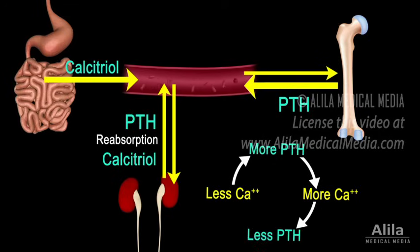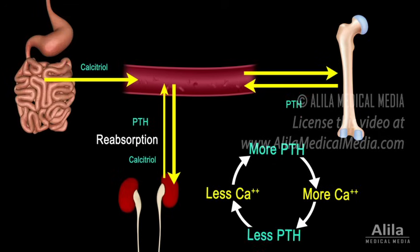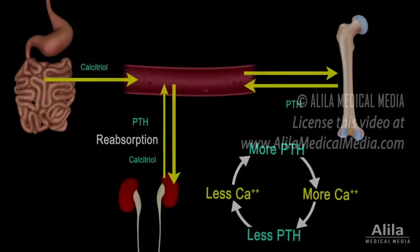The reverse happens when calcium level is high. This feedback loop keeps serum calcium concentrations within the normal range.